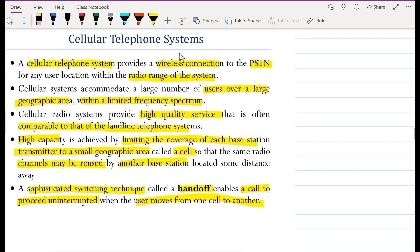And now we discuss the cellular telephone systems, the regular cellular phones that we have today. The cellular telephone system provides a wireless connection to the PSTN for any user within the radio range of the system.